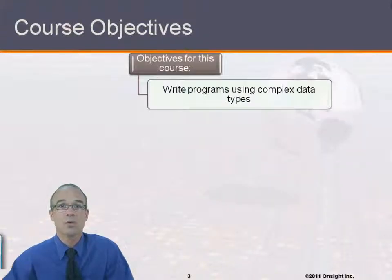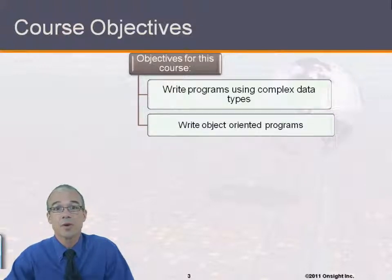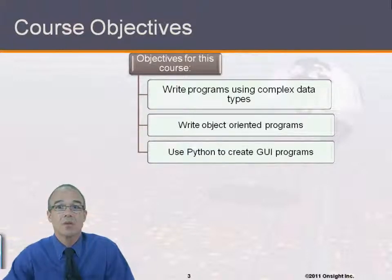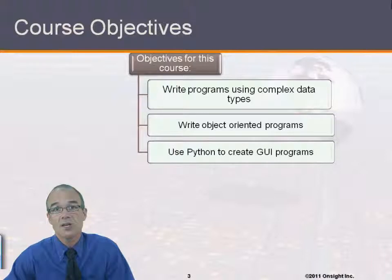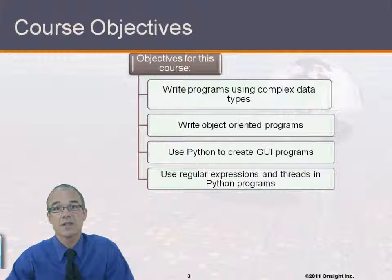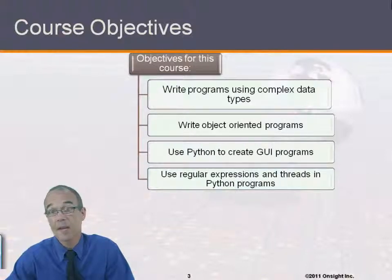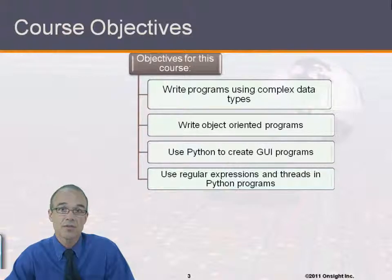The objectives of the course are we're going to write programs using complex data types, from very simple to very complicated. Object-oriented programming concepts will be discussed and we'll write a lot of programs using object-oriented. We'll use the TK inner module to write GUI programs so we can create GUI front-ends to our applications. Regular expressions are a very powerful feature of Python, so we'll talk about how to use those. And we'll also talk about how to create threaded Python programs.